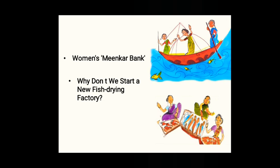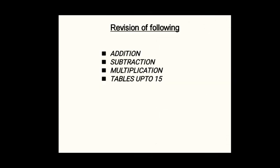These are the topics we are going to learn in the first chapter. At the end, we have a revision of lower standard concepts — that is, addition of two-digit and three-digit numbers, subtraction of two-digit and three-digit numbers, multiplication of two-digit and three-digit numbers, and tables up to 15. Try to solve three to four examples of each.